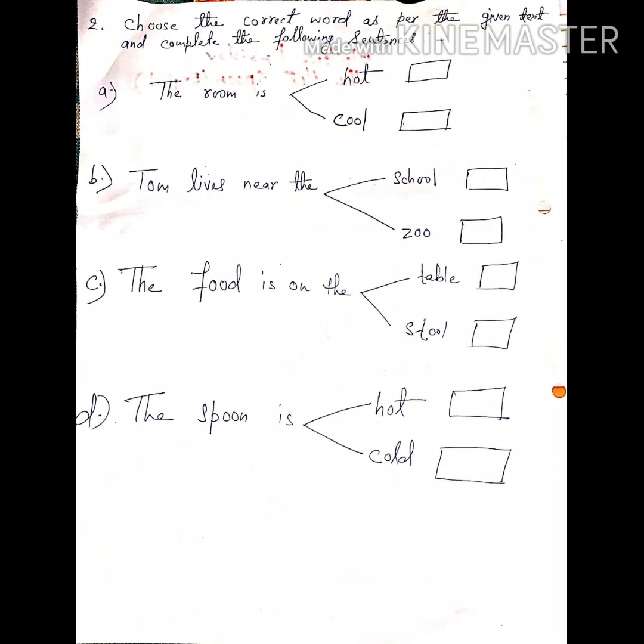Once again I am repeating. A: The room is cool. B: Tom lives near the zoo. C: The food is on the table. And D: The spoon is hot. So we have done the exercise.